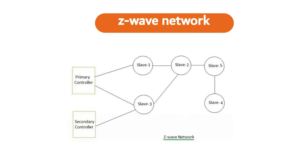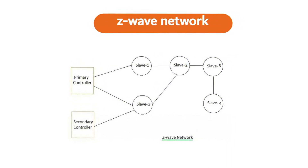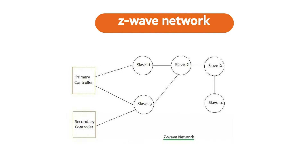Home ID. The ID used by Z-Wave for the separation of the network from each other is called home ID. It is created by the primary controller and is 32-bit in size. Node ID. The identification number or address that is given to every device during the process of inclusion is called node ID. Routing table. It is used by controllers for calculating routes.